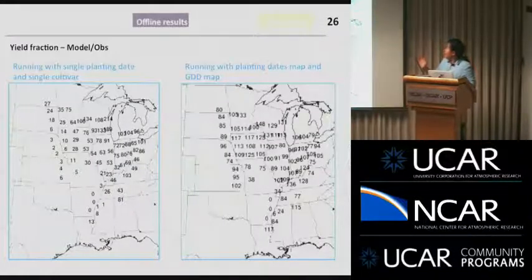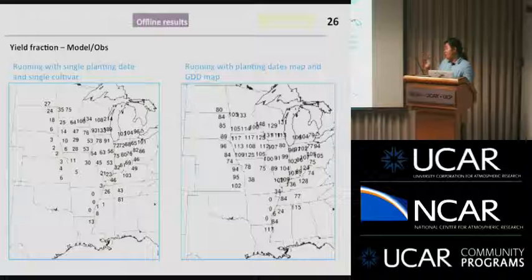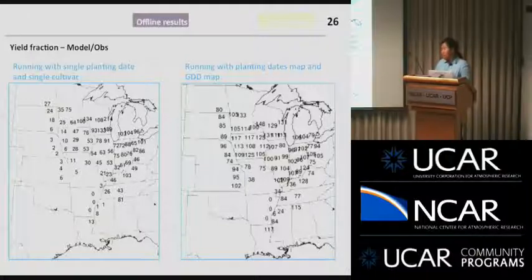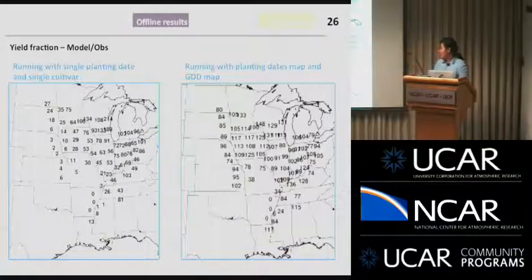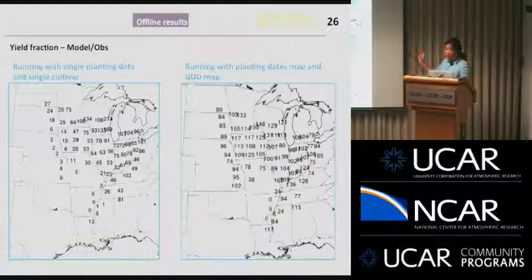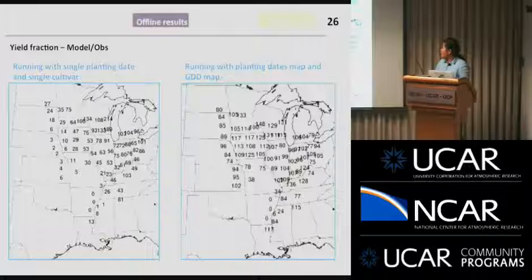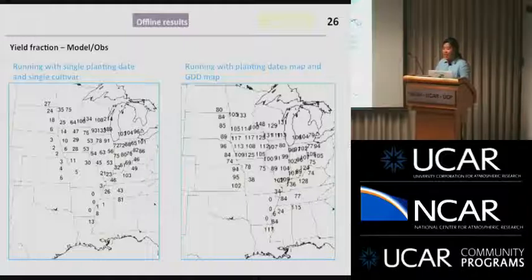This result shows how important it is to incorporate management information. When running the model with a single planting date and single cultivar information, performance is good around Lake Michigan where we developed the model, but poor for the West in Nebraska. When we include management information with spatially varying planting dates and cultivar selection, the ratio of model to observations improves greatly in the western part too. It's very important to add planting dates and cultivar selection when doing regional runs.